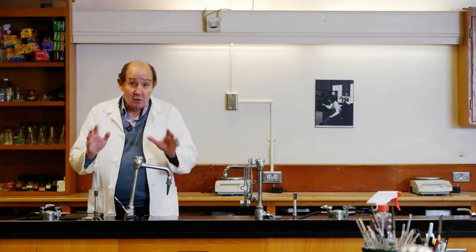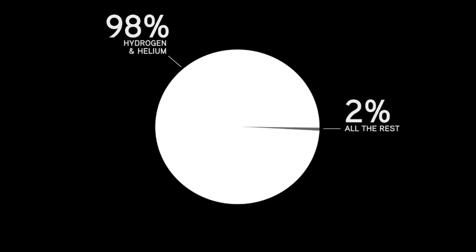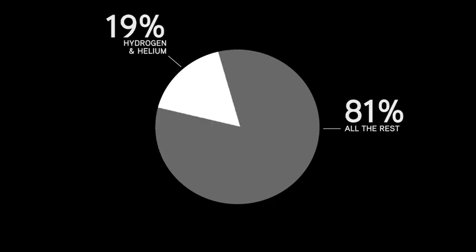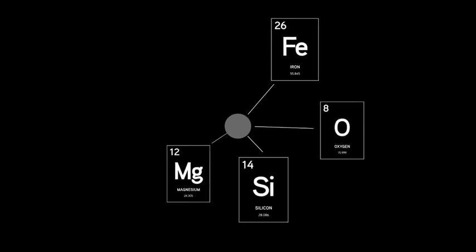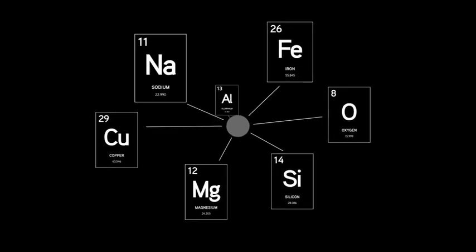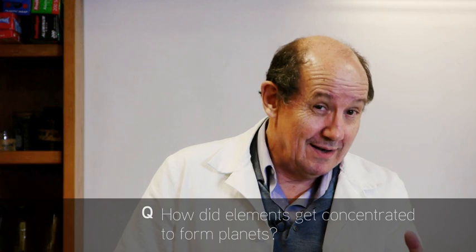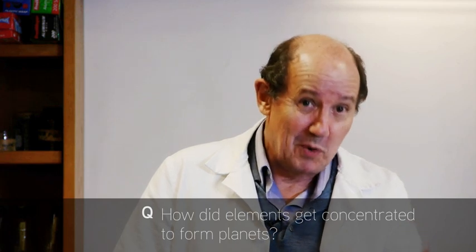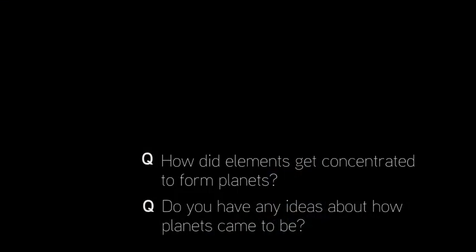But before we describe how the Earth and the other planets of the solar system was created, there's a little problem we have to take up. Now, you'll remember from the last unit, we saw that all those new elements that were created made up only 2% of all the atoms in the universe. Yet, if we look at our Earth, we'll find that 90% of the Earth is made up of elements like iron, oxygen, silicon, magnesium, and other elements created in supernovae and dying stars. So, how did they get concentrated like this to form planets and bodies like that? Now, before I give my answer, I'd like to ask if you have any ideas about how that might have happened.